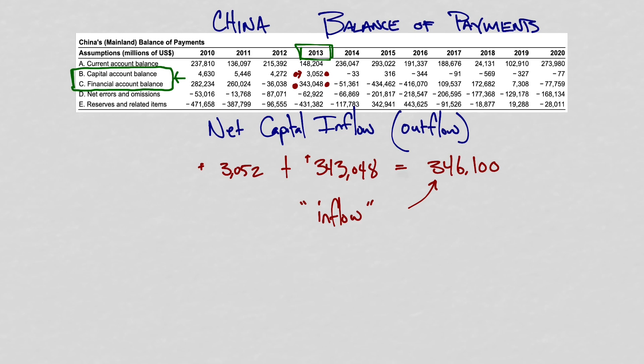Countries are dynamic, and the balance of payments reflects that. Really what we're seeing is a year-by-year dashboard of what this country is doing economically with other countries around the world. And that changes from year to year based on macroeconomic conditions, political conditions, and all sorts of things.